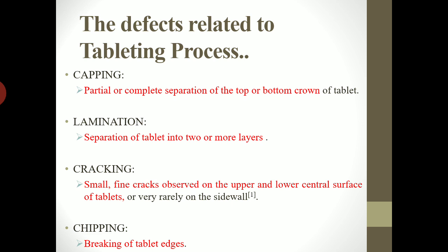The first defect is capping. The definition is very simple: partial or complete separation of the top or bottom crown of the tablet is called capping. So only the upper or lower portion of the tablet will get removed either partially or completely. Next is lamination — as the name suggests, the tablet will be separated into different layers.